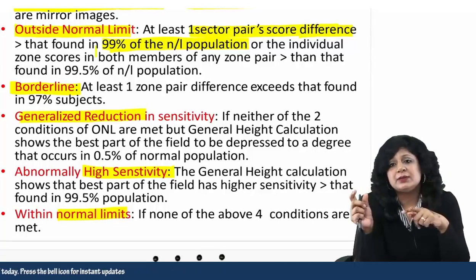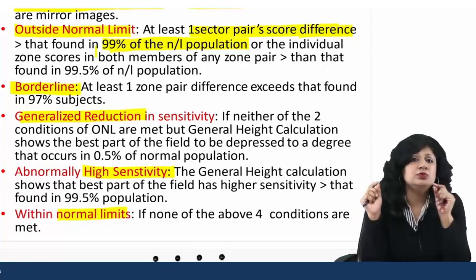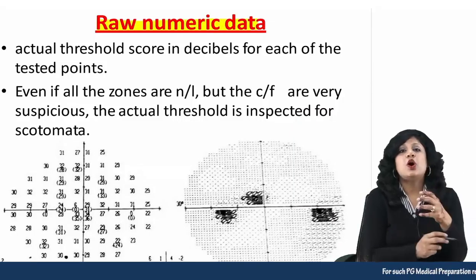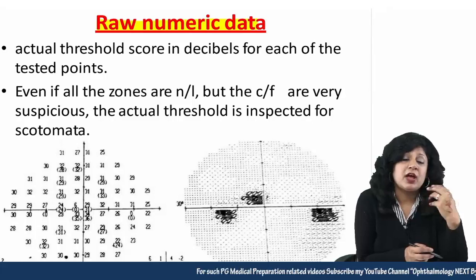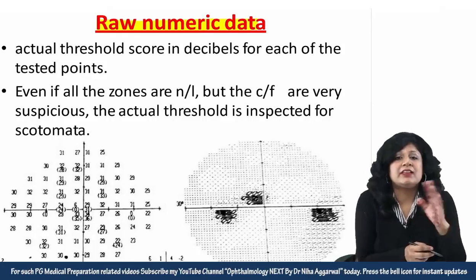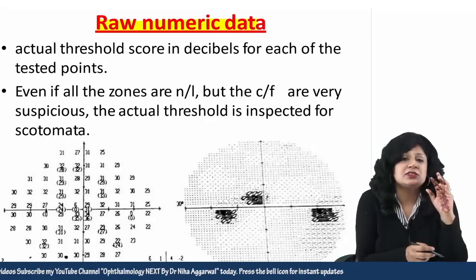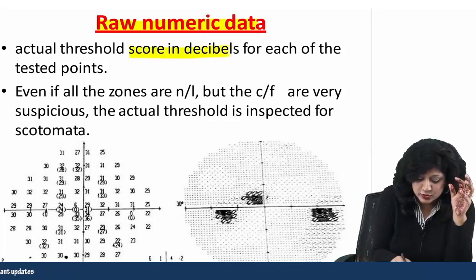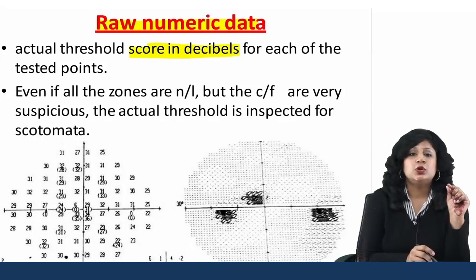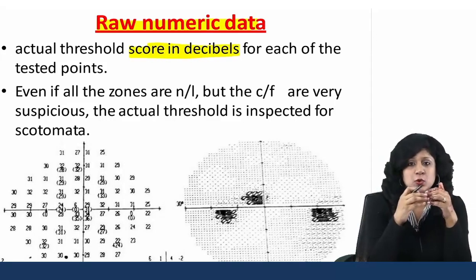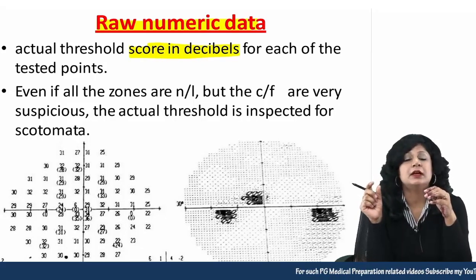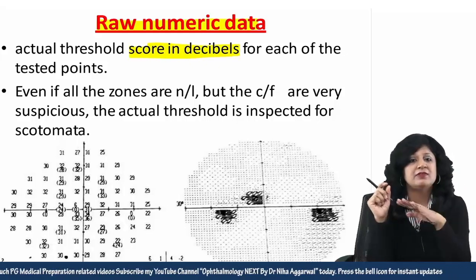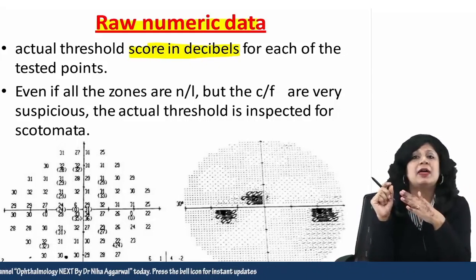Then there is raw numeric data. Raw means nothing has been modified — we have simply plotted the numeric values. These numeric values are the scores in decibels for each test point — the threshold value at which the patient is just able to see, plotted as-is. That is called the raw numeric data.